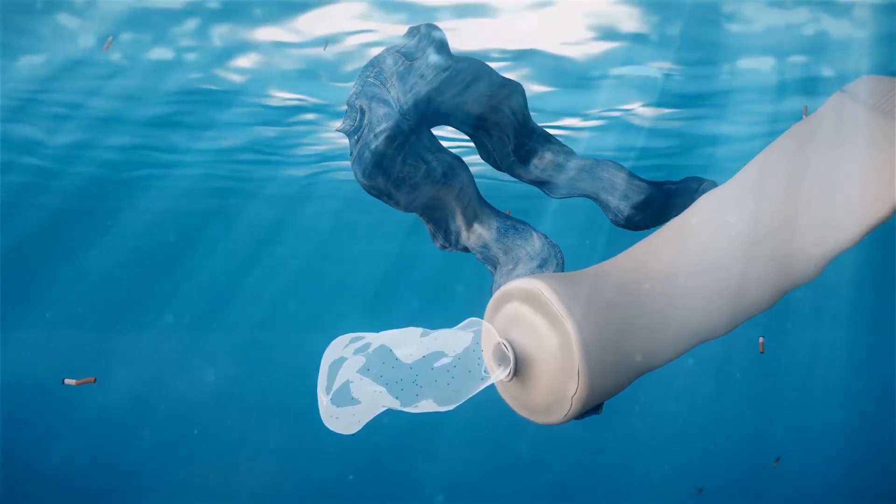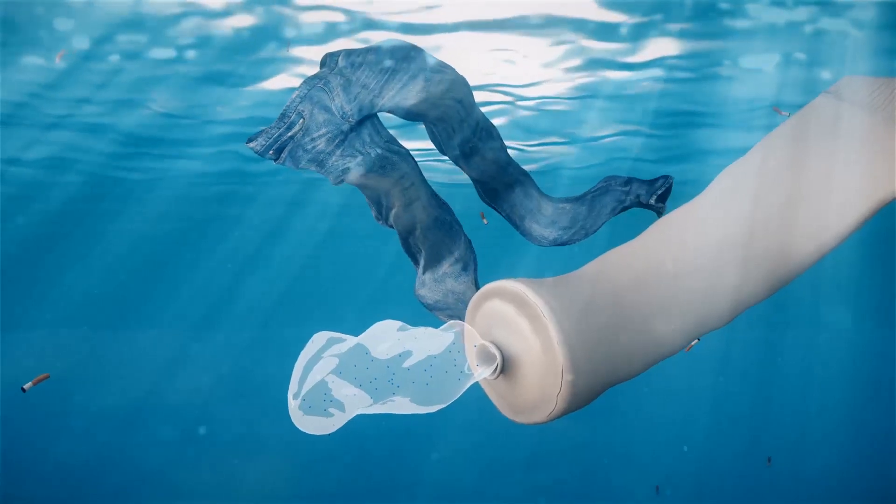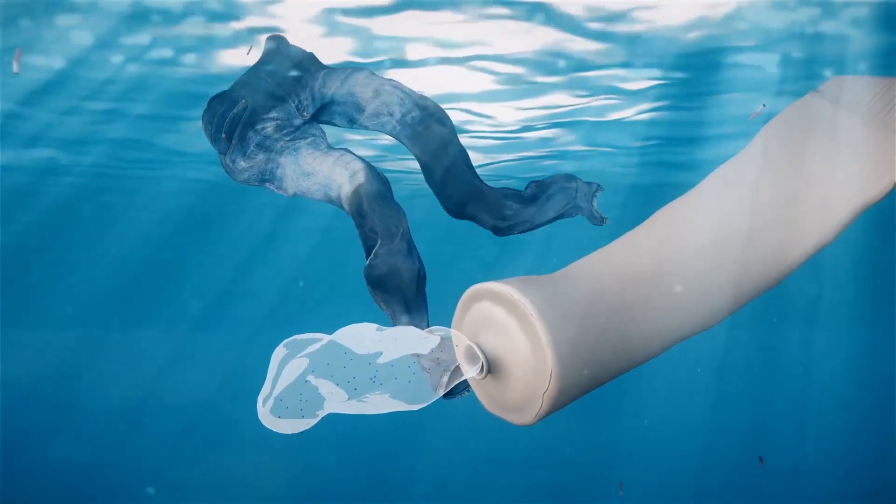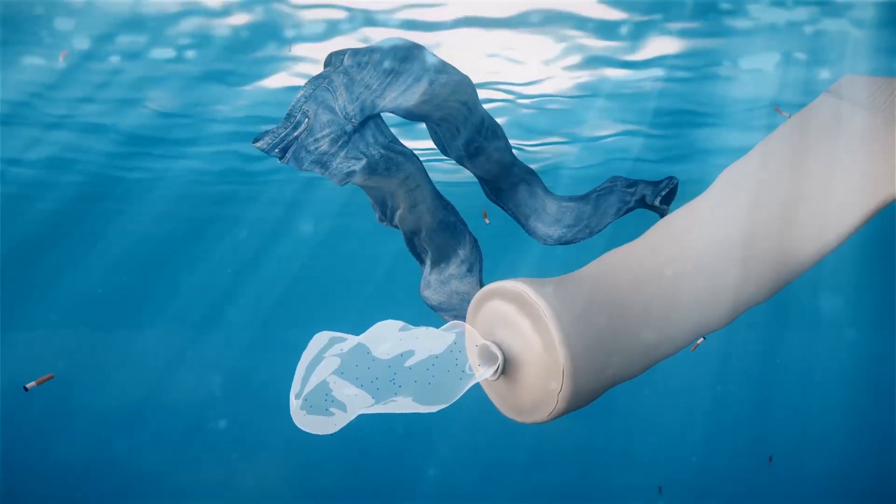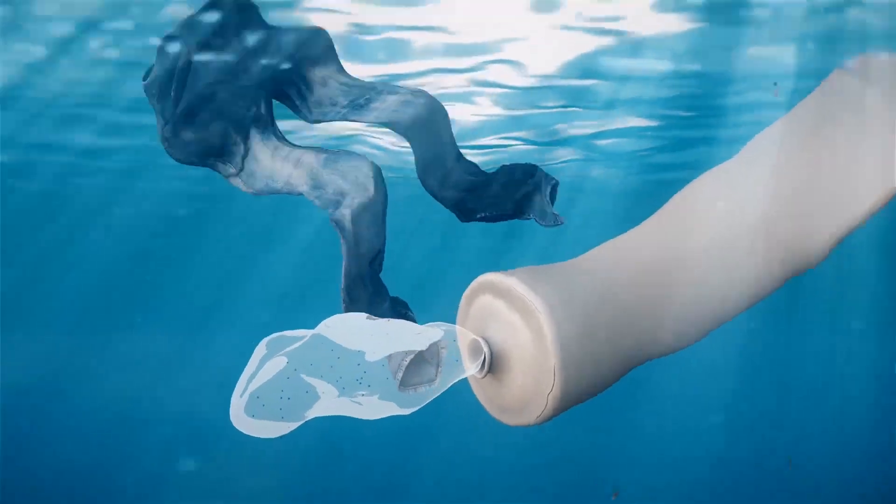Microplastics are plastic particles less than five millimeters in diameter. They can be created when larger plastic products break down, such as plastic bottles, clothing fibers, and cigarette filters. They're also intentionally added to some cosmetics and personal hygiene products.